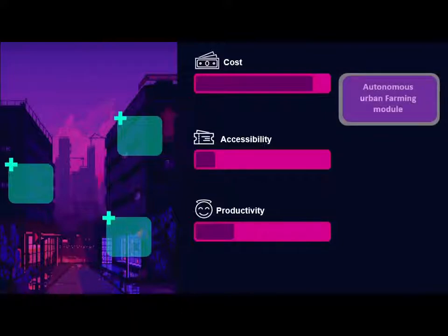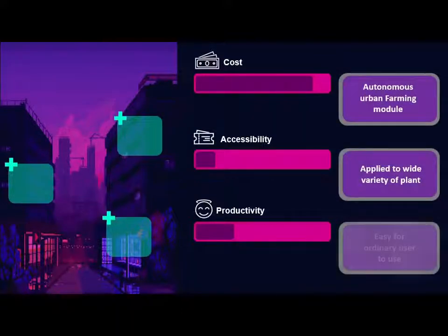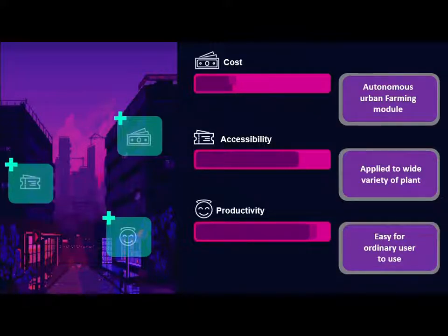To solve this problem, we propose an autonomous urban farming module that is easy for ordinary citizens to use. A system that can be applied to a wide variety of plants as compared to niche urban farming limited to salads and small herbs, while retaining high modularity and seamless integration.